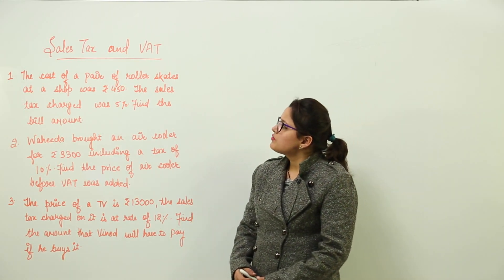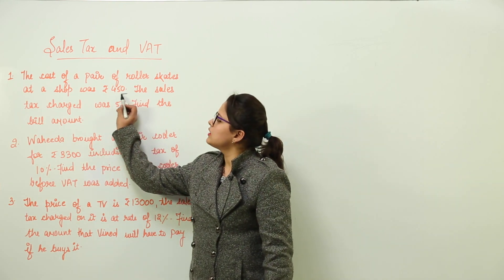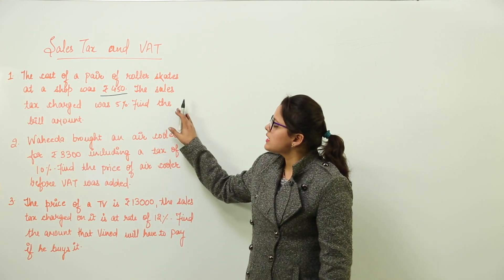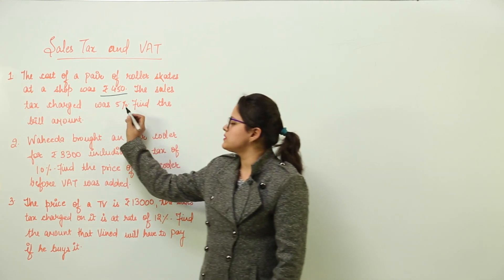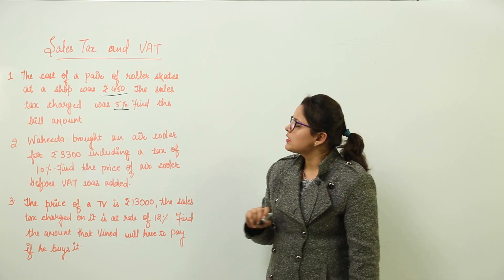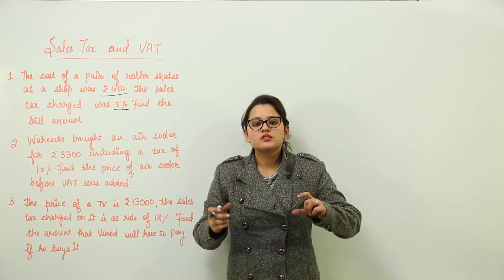The question is: the cost of a pair of roller skates at a shop was ₹450. The sales tax charged was 5%. We have to find the bill amount. As we know, the sales tax charged is always added with the cost price and that makes the bill amount.